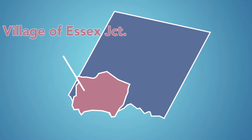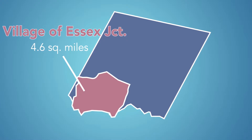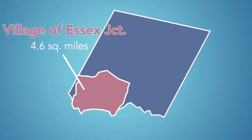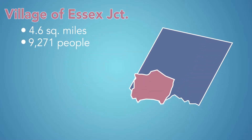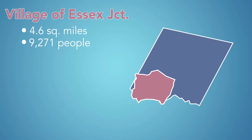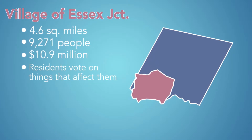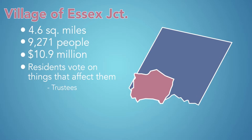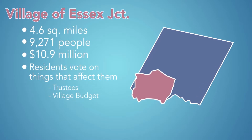The village of Essex Junction is a 4.6-square-mile municipality within the town of Essex. It has a population of 9,271 people and a grand list of 10 million. Every resident of the village of Essex Junction gets to vote on things like electing the five-member governing body, the Essex Junction trustees, and voting on the village budget.